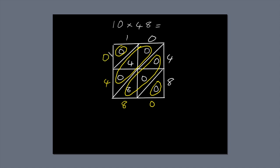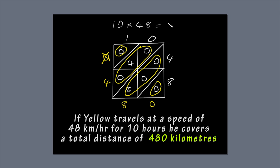Now, read off the answer, crossing off the first 0. 4, 8, 0. So if Yellow travels at 48 kilometres an hour for 10 hours, he covers a total distance of 480 kilometres.